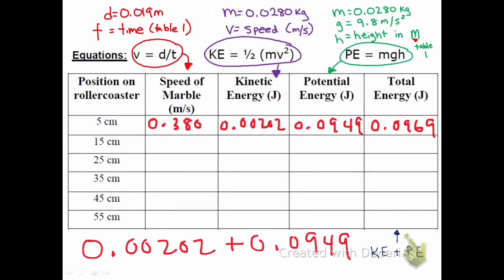And then you're just going to repeat this process for all of your data points. Speed equals distance divided by time. Kinetic energy is 1/2 mv squared. Potential energy is mgh. Don't forget to convert the h from your first data table. And then add up the potential and the kinetic to get the total energy.